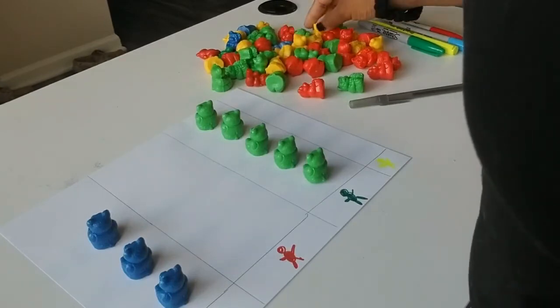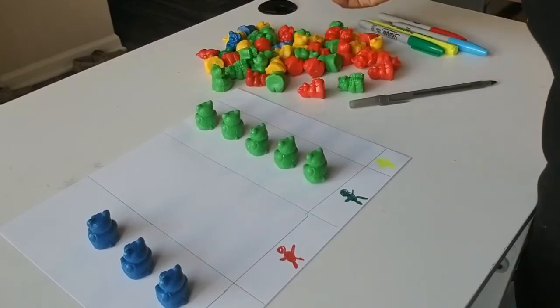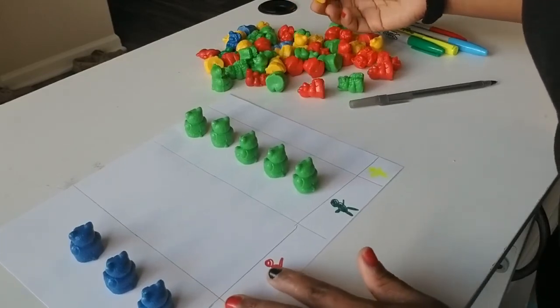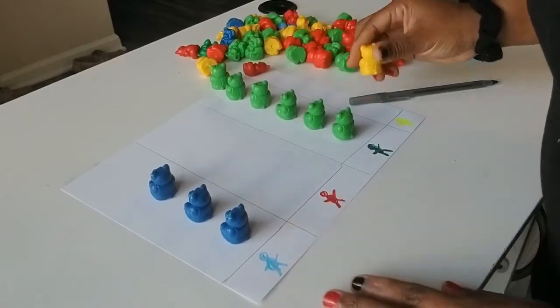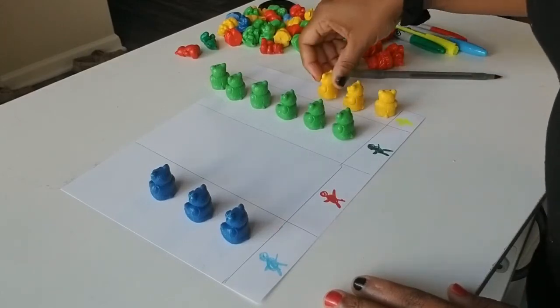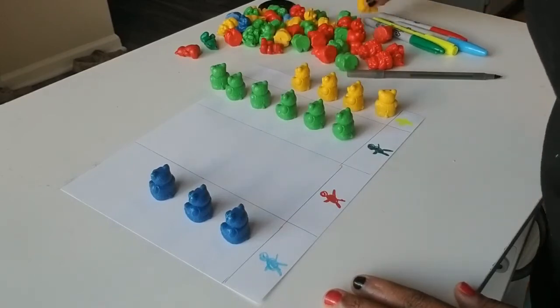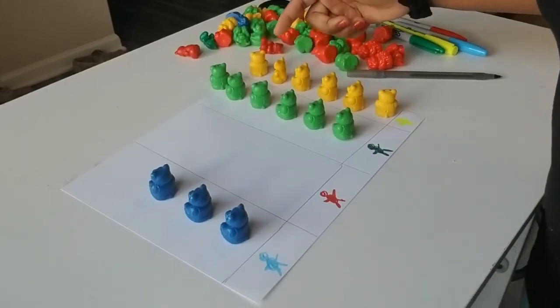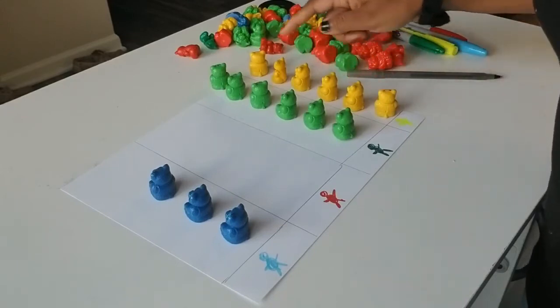And then you're going to say, hey, can you find me six yellow bears? So they have to come over here and find the six yellow bears and put them in the yellow column. One, two, three, four, five, six. And then have the child count the bears back. One, two, three, four, five, six. Make sure they're pointing.